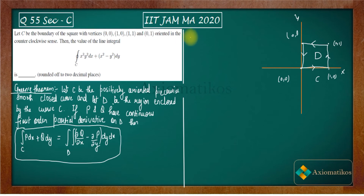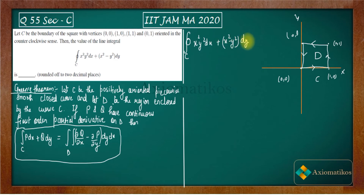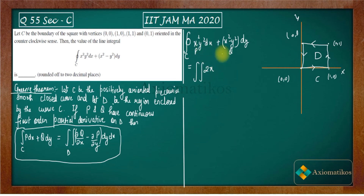According to Green's theorem, the integral over C of x²y² dx + (x² − y²) dy equals the double integral of (∂Q/∂x − ∂P/∂y). Here P = x²y² and Q = x² − y². So ∂Q/∂x = 2x, and ∂P/∂y = 2x²y. This gives us the double integral of (2x − 2x²y) that we need to evaluate over the square.